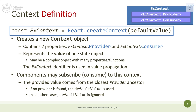The idea is to provide a simple way to share limited and simple information through the entire application. You create the object and from that moment you have a provider and consumer. Other components can subscribe to this context and exchange the value if needed via the provider. If at least one provider exists, the value used is the one provided by the provider; otherwise the default value is used.